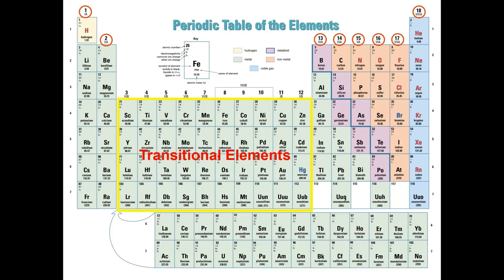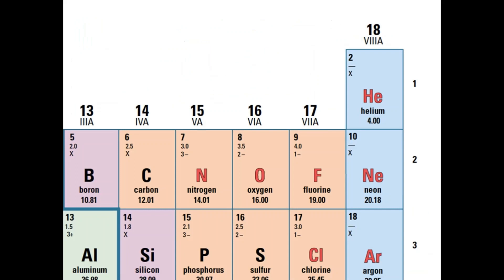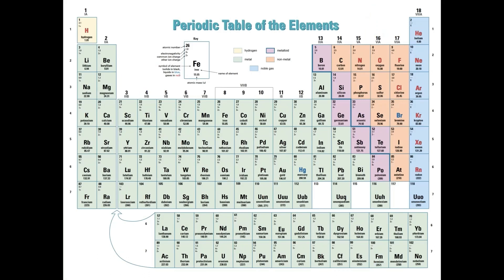To emphasize that groups 13 through 18 are among the primary groups, scientists have assigned an alternate designation for each of these groups. If you look directly underneath the group number for each of these columns, you'll notice a Roman numeral followed by the letter A. For group 13, the Roman numeral is 3, so this group is also called group 3A. For group 14, the Roman numeral is 4, so this group is also called group 4A. For group 18, the Roman numeral is 8, so this group is also called group 8A. And so the eight primary groups are group 1, group 2, group 3A, 4A, 5A, 6A, 7A, and group 8A.